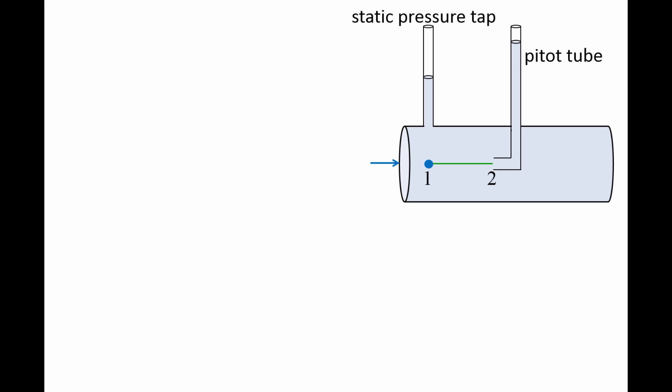One application of the Bernoulli equation is the determination of flow speed. Here we have a pipe with a static pressure tap above point 1 and an L-shaped tube called a pitot tube at point 2. The pipe contains a liquid that is flowing steadily from left to right, and a streamline connects points 1 and 2. The liquid level rises in the pressure tap to a height equal to the pressure head plus elevation head, so we can measure the pressure at point 1 by measuring the height of the liquid in the pressure tap. Notice that the liquid level is higher in the pitot tube.